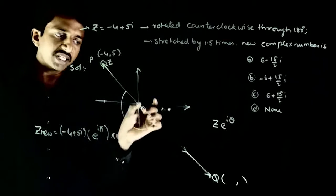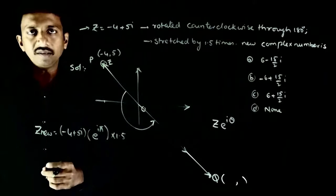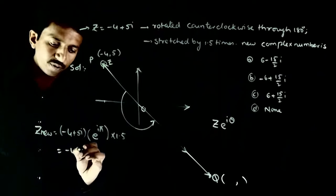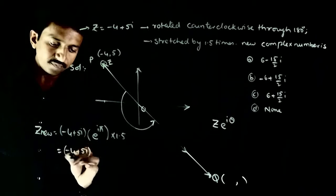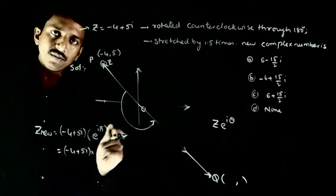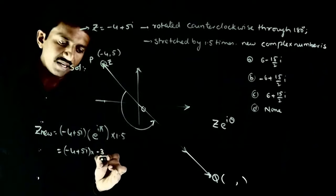This 1.5 stretches the magnitude of the vector by 1.5 times. So that is equal to (-4 + 5i) times e^(iπ), which is -1, times 3/2. So -3/2.